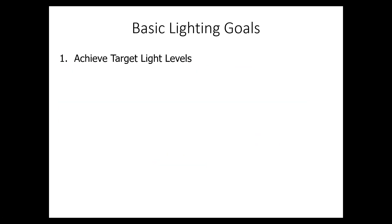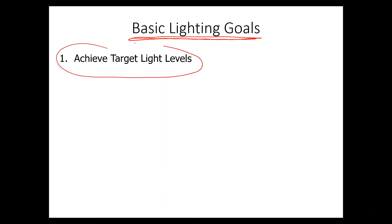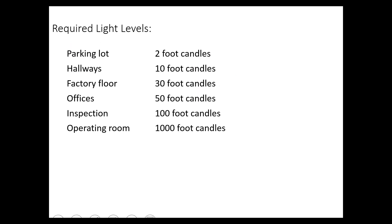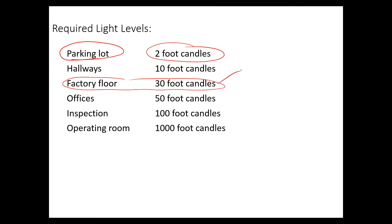Let's pull this information together and establish some basic lighting goals. In any lighting retrofit, you want to understand the target light levels, which come from an organization called the Illuminating Engineering Society (IES). They publish what's required in different environments. For example, in a parking lot you're only required to have about one to three foot candles. On a factory floor or aisleway, about 30 foot candles — and overseas this would be in lux; 30 foot candles equals about 300 lux. For offices or a writing environment, around 50 foot candles.